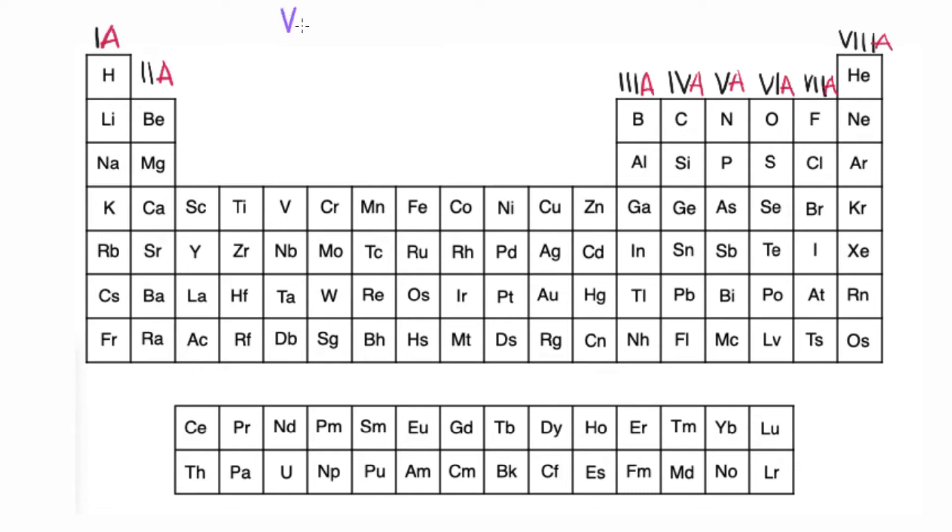So how do you figure out how many valence electrons there are for a certain element? Well, you have to look at the group that it's in.